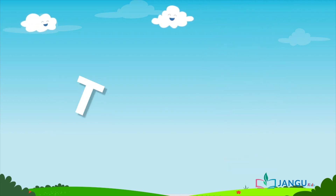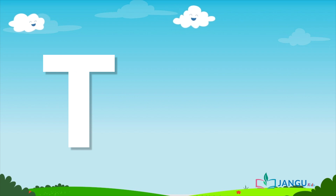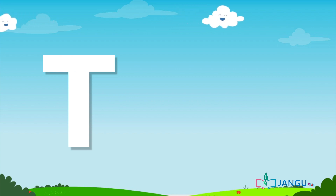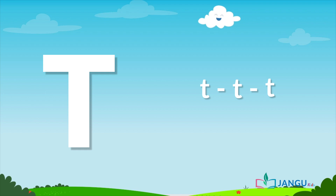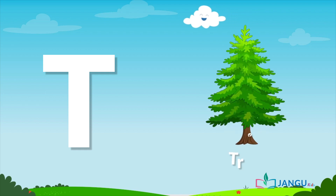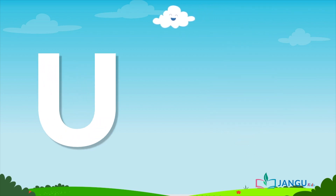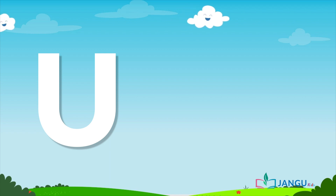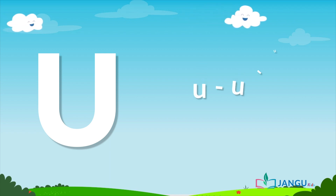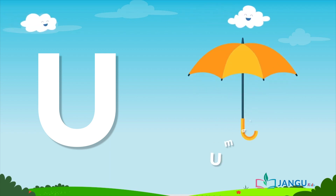T is pronounced as 'T' — T, T, T, T. Say after me: T, T, T, T. As in tree. U is pronounced as 'U' — U, U, U, U. Say after me: U, U, U, U. As in umbrella.